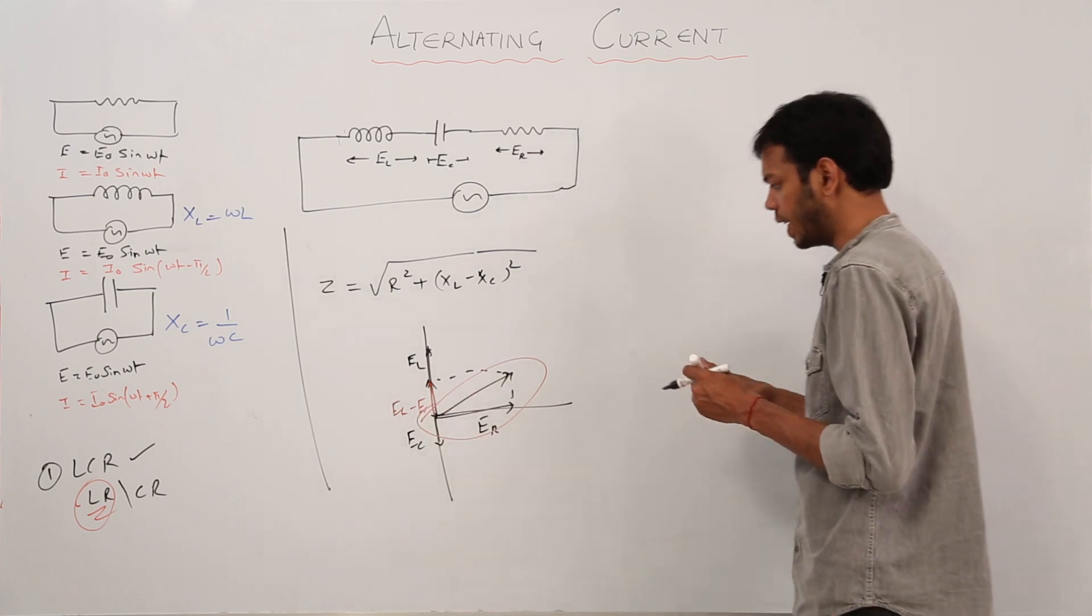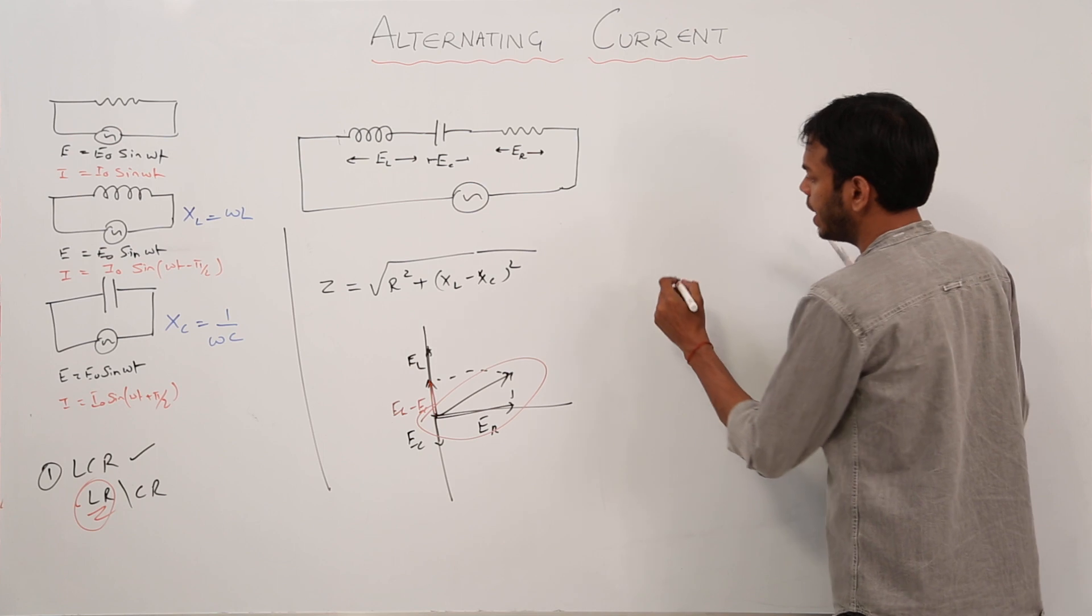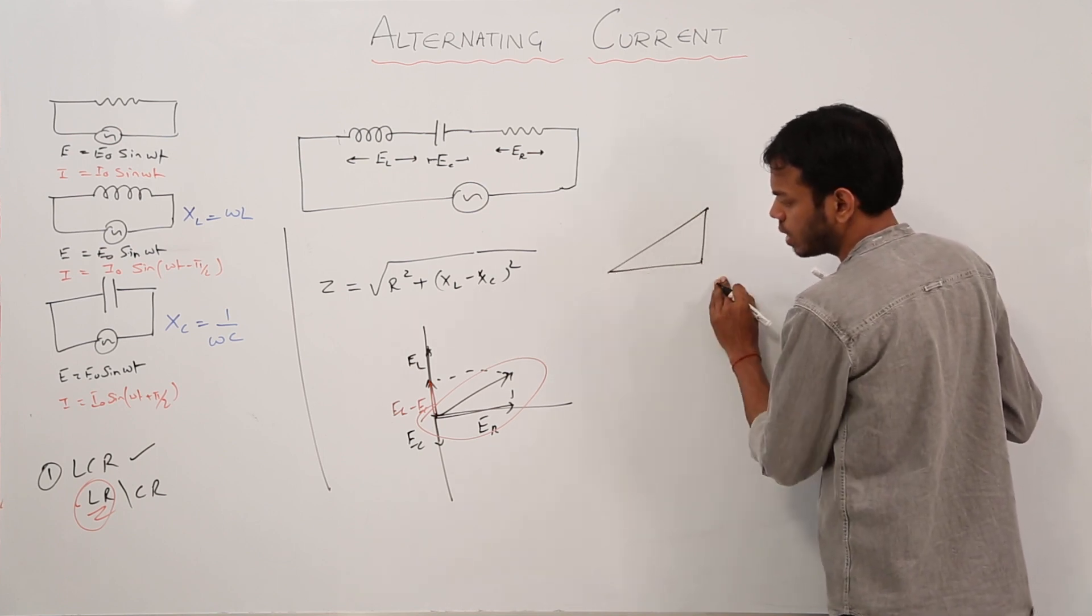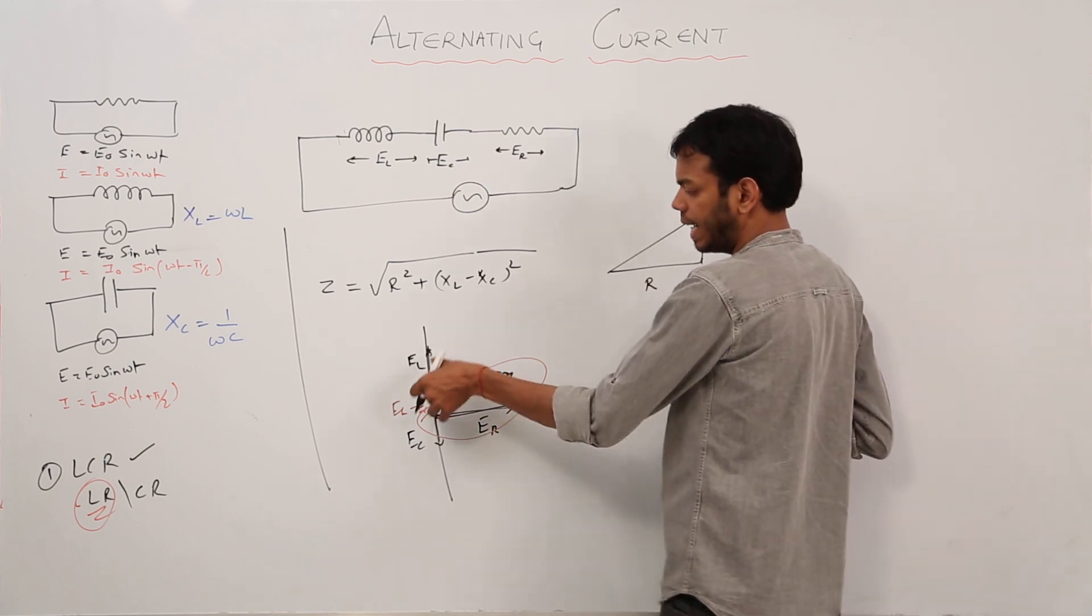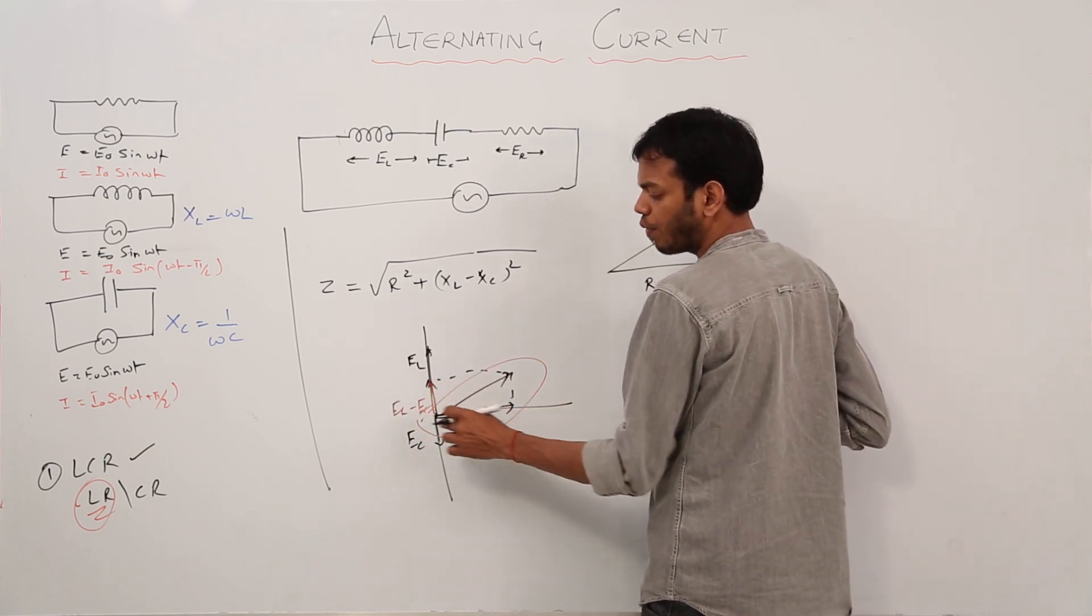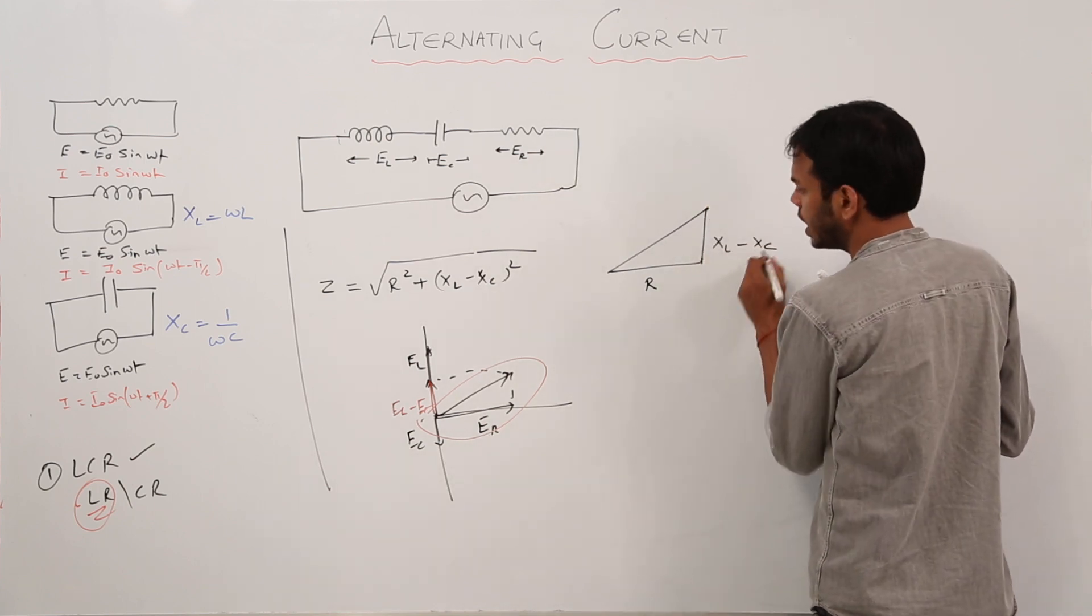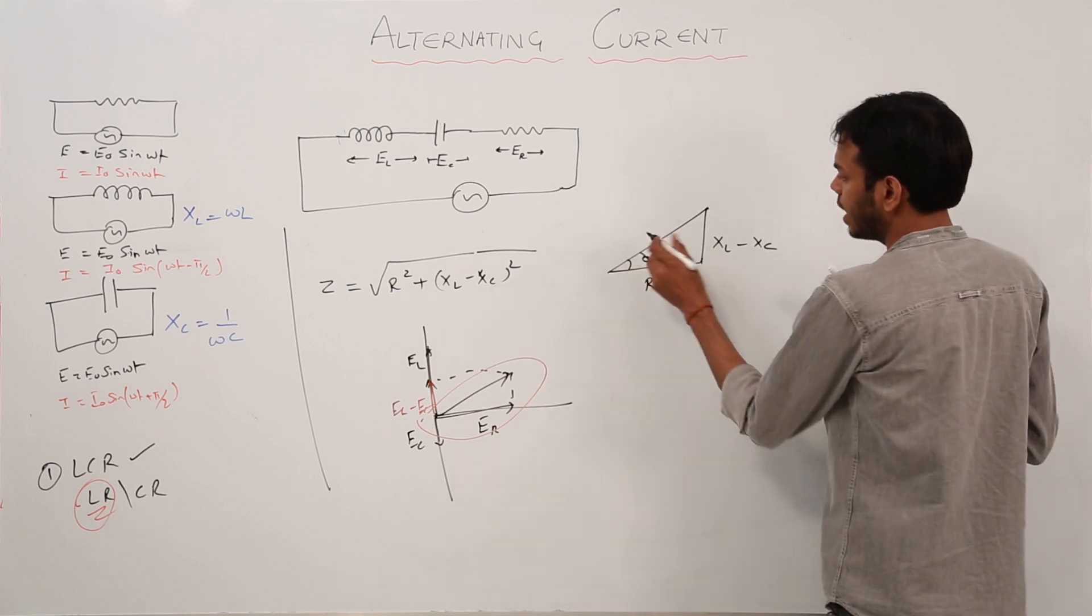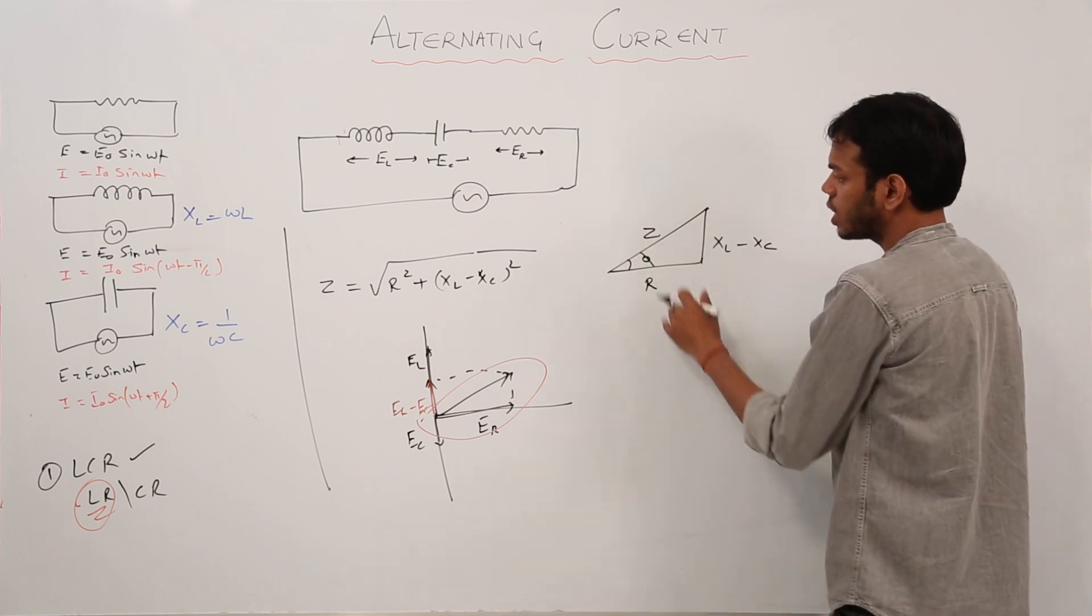If you take this part in terms of resistance only, you can make this diagram like a triangle, where this is representing the resistance, and this is representing resistance of EL and EC, that means this will be XL minus XC, then this angle is phi, and consequently the resultant resistance is Z.